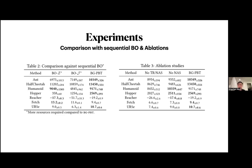An ablation study examines two components: the high-dimensional tailored BO agent, and whether architecture search helps. Results are mixed — in some environments, BGPBT without architecture search actually performs better. This may be because during architecture selection, poor architectures are proposed and discarded without contributing useful learning during that period.